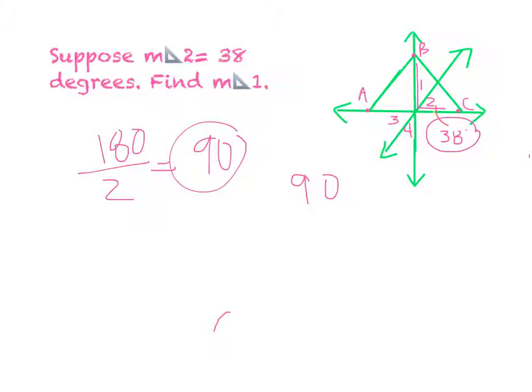90 minus 38 degrees equals 52. So the measurement of angle 1 equals 52 degrees.